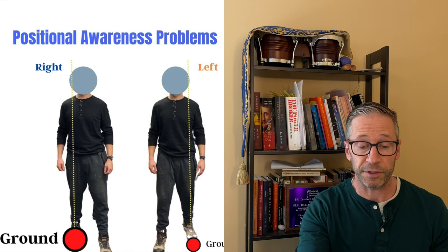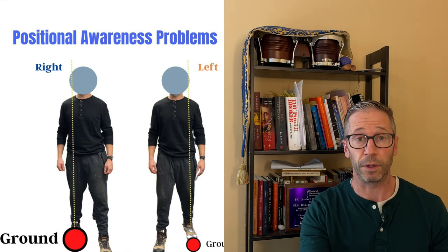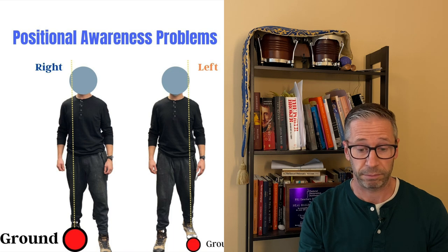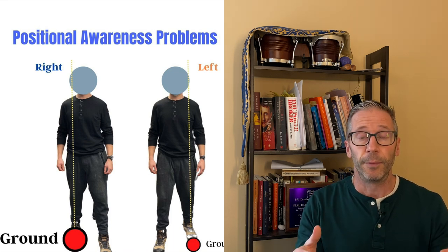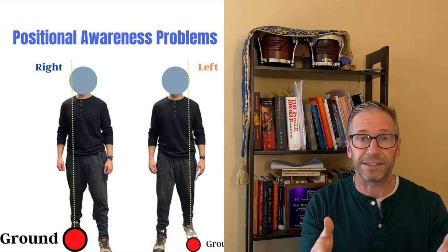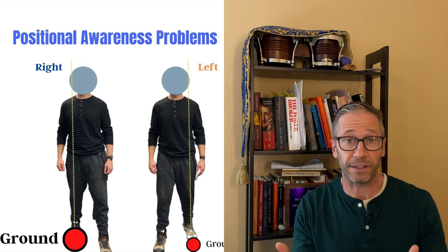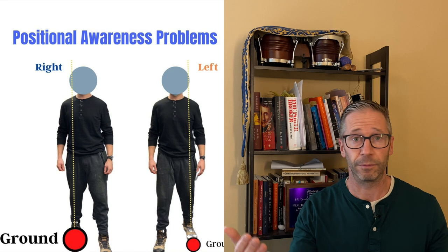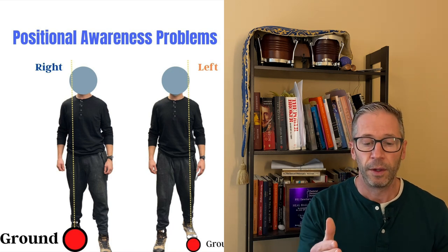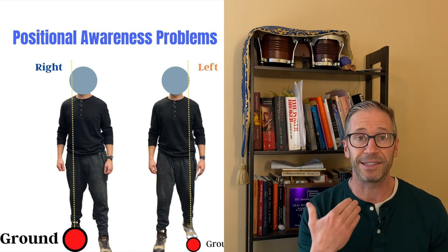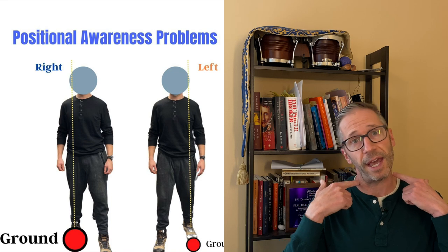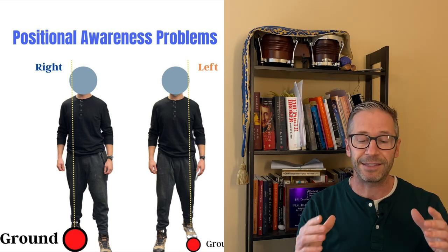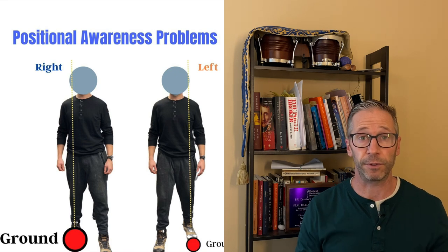That's going to cause issues with the lower body — back pain, knee pain, any type of pain in the lower body — because this brain does not know where the left side is. They're effectively working on one side through all their movements: walking, running, lifting, whatever it's going to be. But the biggest issue in my mind is the neck. The only way a neck can side-bend and rotate is if you have two sides available to you.